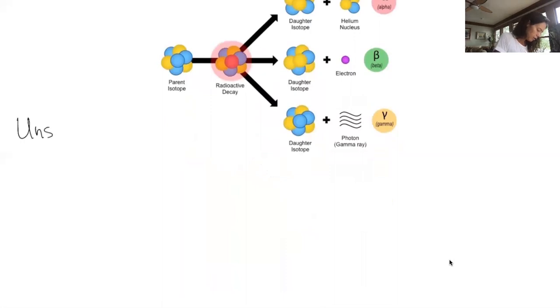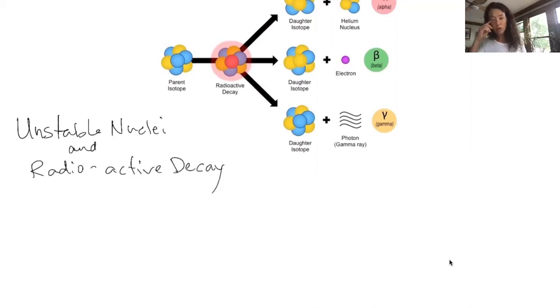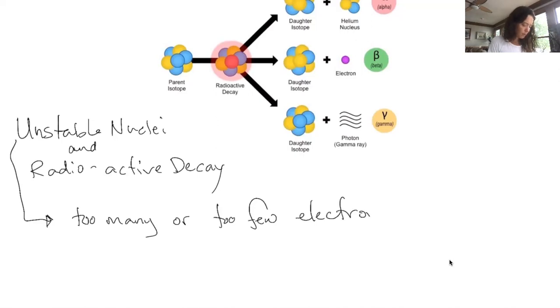We're going to call this unstable nuclei and radioactive decay. So we've talked a little bit about unstable nuclei and basically what causes our nucleus to be unstable is too many or too few electrons. Like we said in class, when that ratio is far from one to one off, we're going to have an unstable nucleus. We have too many or too few electrons.